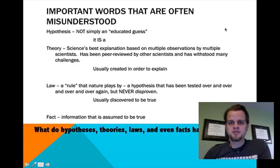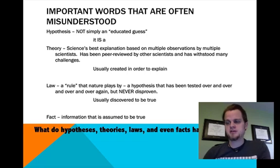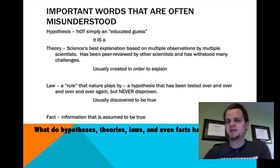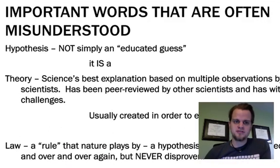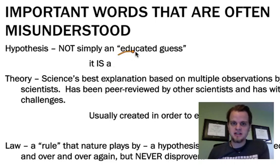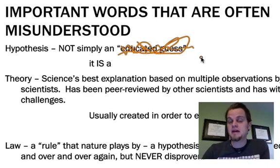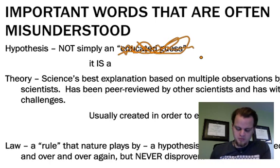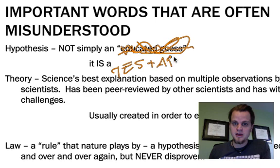Now on to important words that are often misunderstood. It's really important that you know these so that, as an educated citizen, you know what scientists and journalists are actually saying. First: hypothesis. A lot of us typically think of it as an educated guess — get that out of your vocabulary. What we know now is that it is a testable prediction.